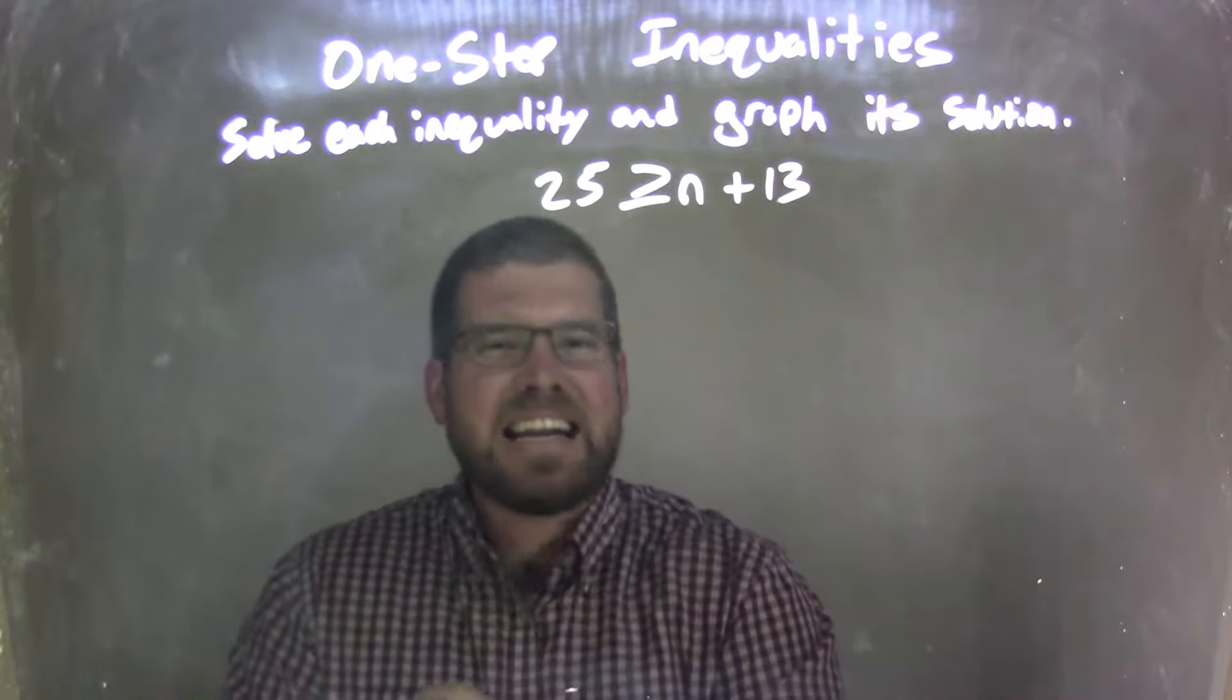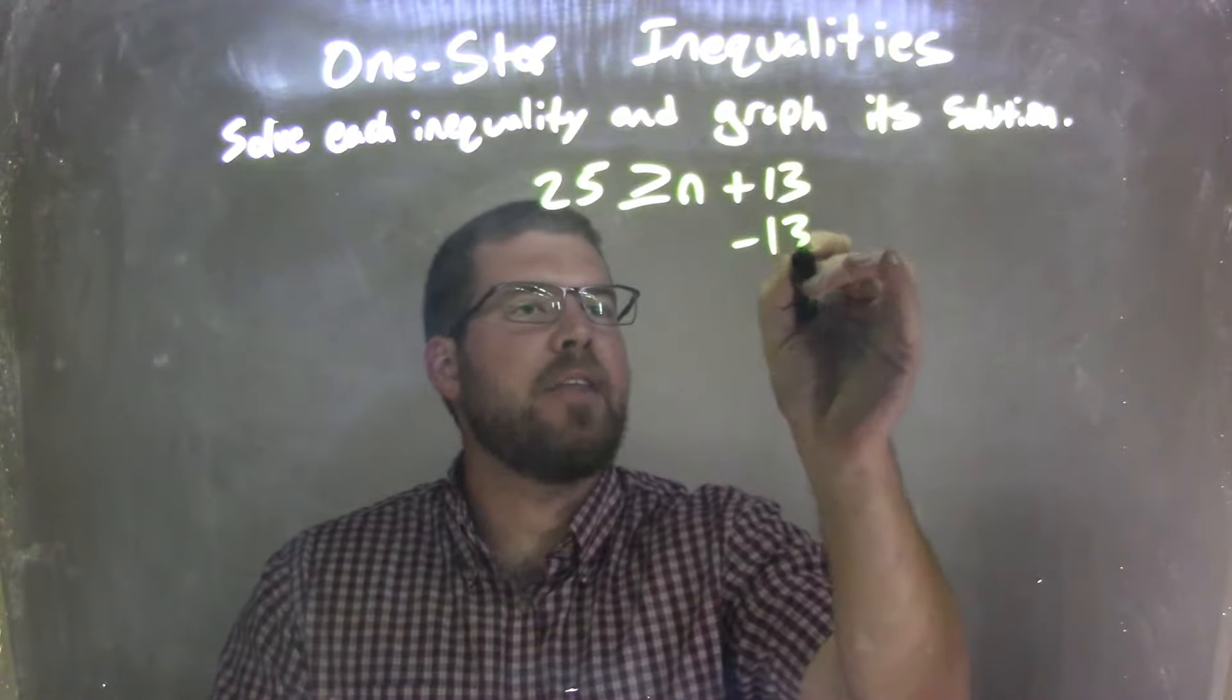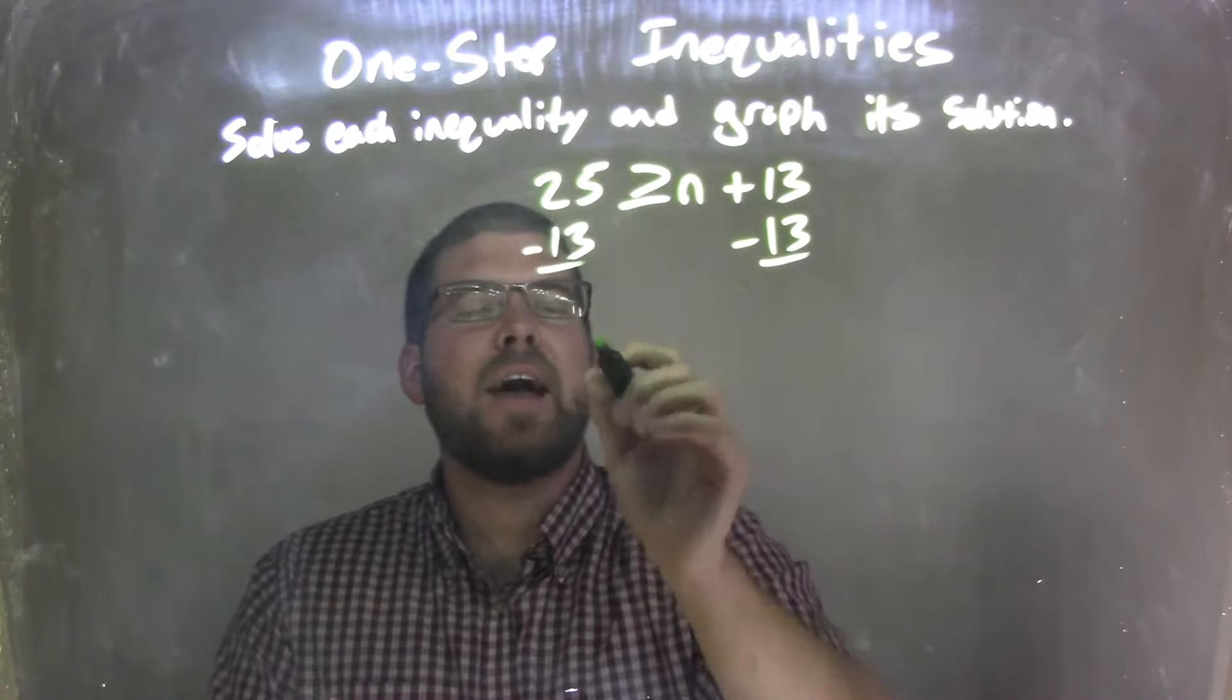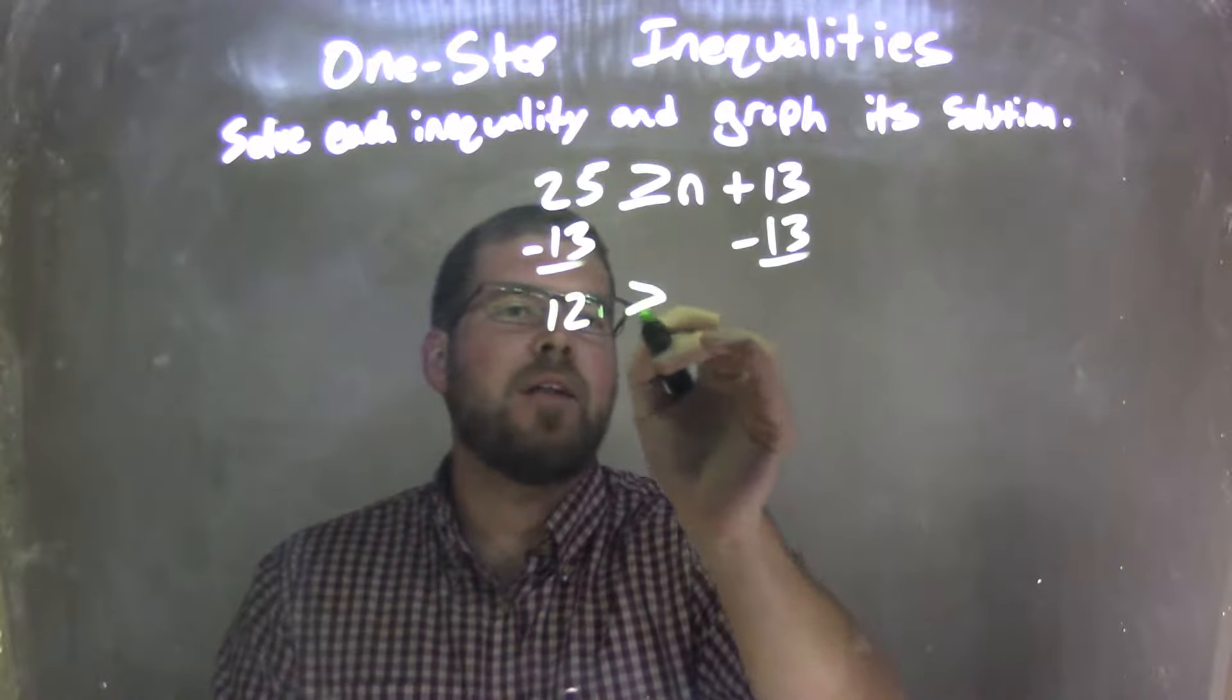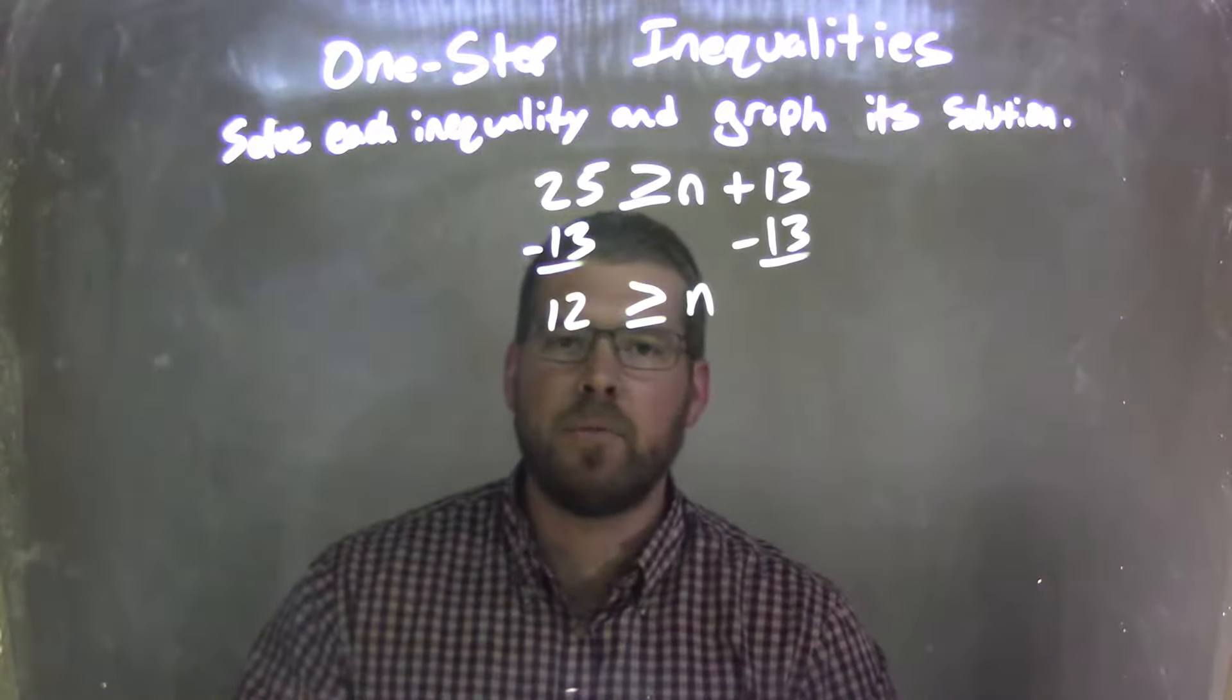Well, my first step is I need to isolate the n, so I'm going to subtract 13 from both sides. That leaves me with 25 minus 13 on the left, which comes out to be 12, is greater than or equal to n, which is just left on the right.